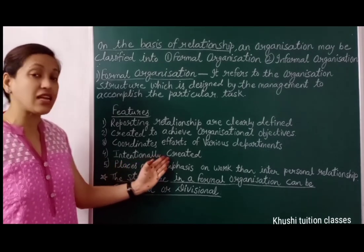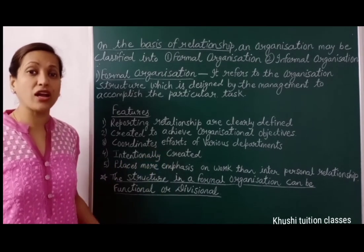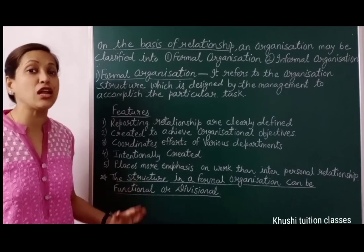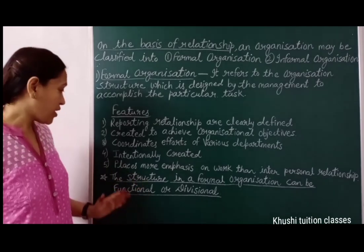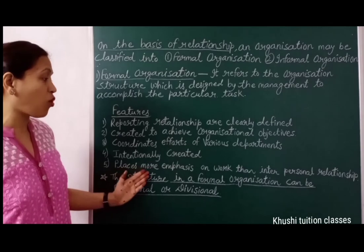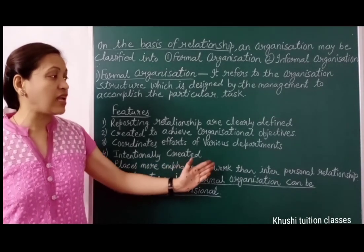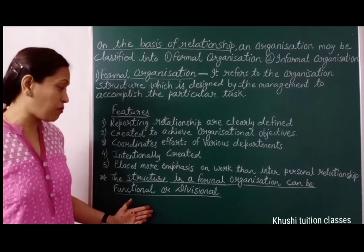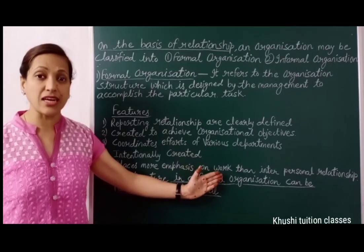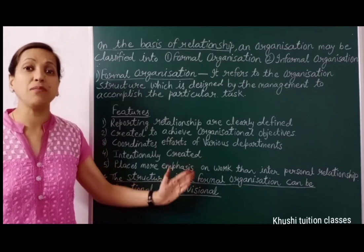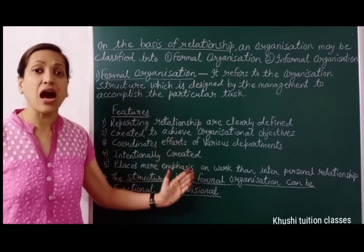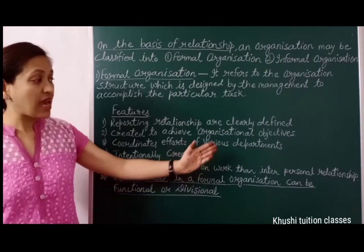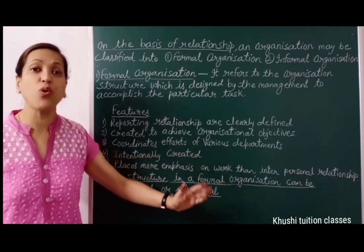The fourth feature is that formal organization is intentionally created by top management deliberately. The fifth is that it places more emphasis on work than interpersonal relationships — formal organization gives more importance to work. Our work should be accomplished in any case, and employees' interpersonal relationships may be ignored.